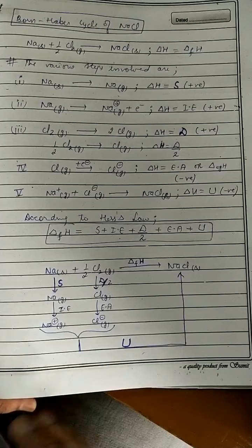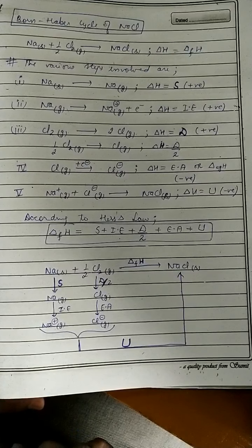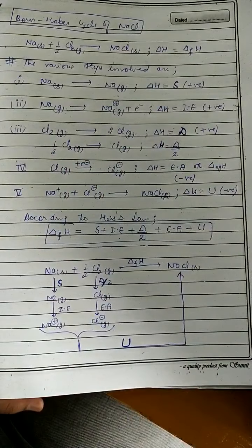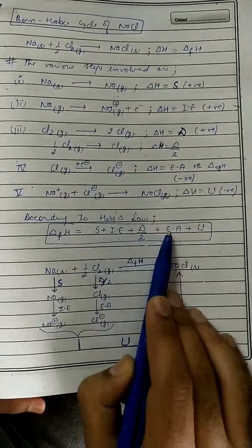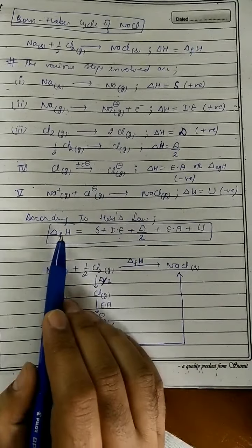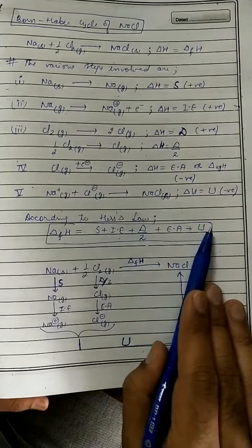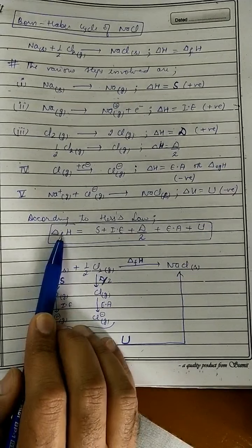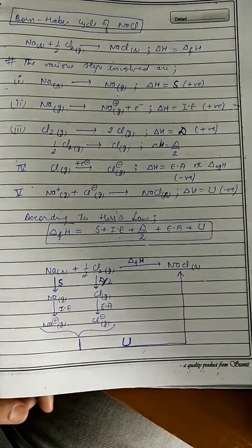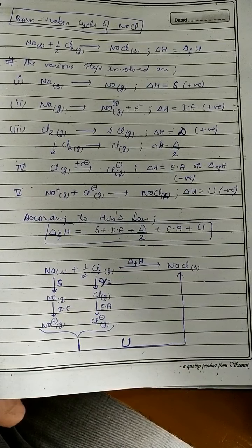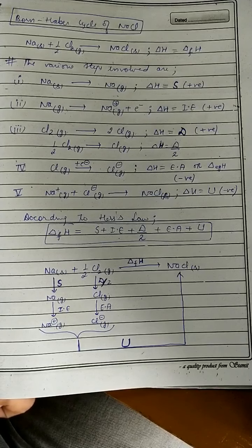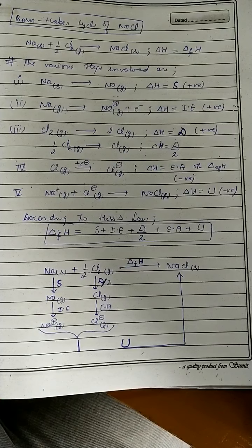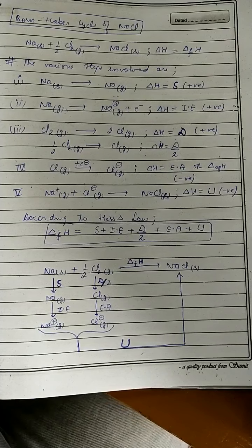Born-Haber cycle की applications: By making use of Born-Haber cycle, we can calculate the enthalpy of formation of any ionic compound, or the lattice enthalpy of any ionic compound। In numericals, out of six quantities (delta_f H, S, IE, D, EA, U), five will be given and one has to be calculated। Usually enthalpy of formation या lattice enthalpy निकालने के लिए Born-Haber cycle draw किया जाता है।